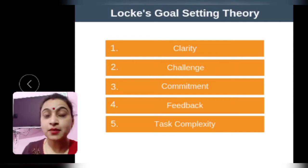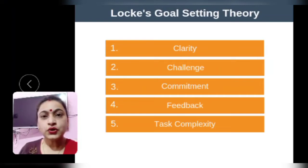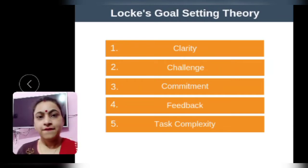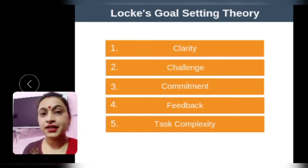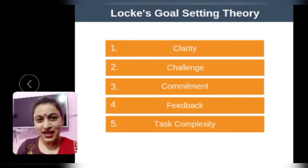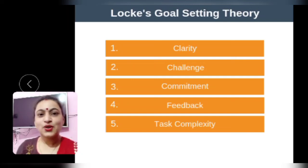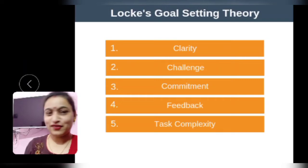Third is commitment — stay committed. If you are not committed to your work, you will not do it honestly. You need to be committed to the goal to accomplish whatever you have fixed for yourself. Fourth is feedback: after you complete and accomplish your goal, you get feedback and feel contented — that contentment is your feedback. Through that feedback you feel motivated, and that motivation drives you toward a more challenging next goal, resulting in better task performance.